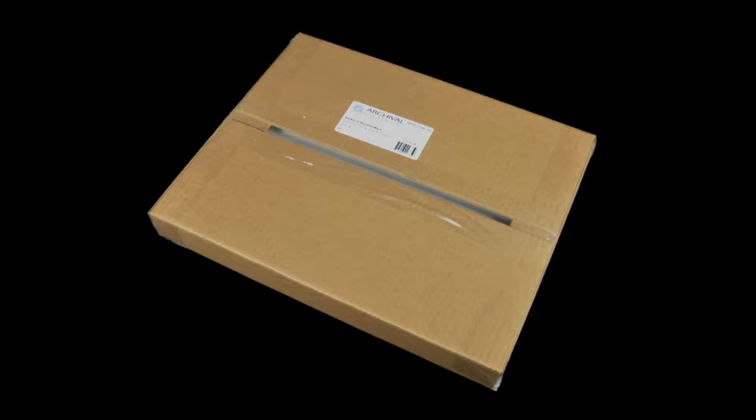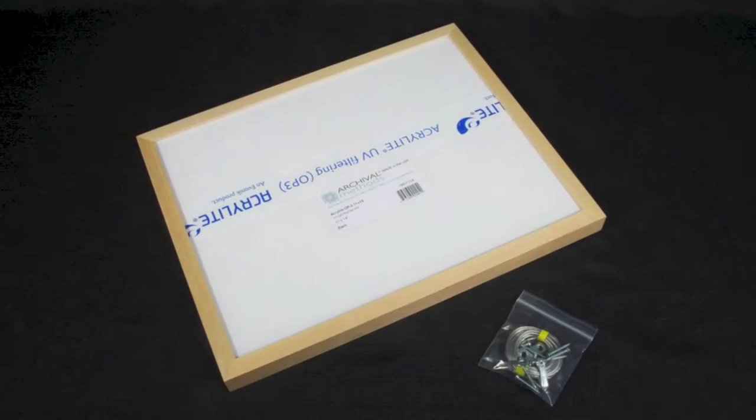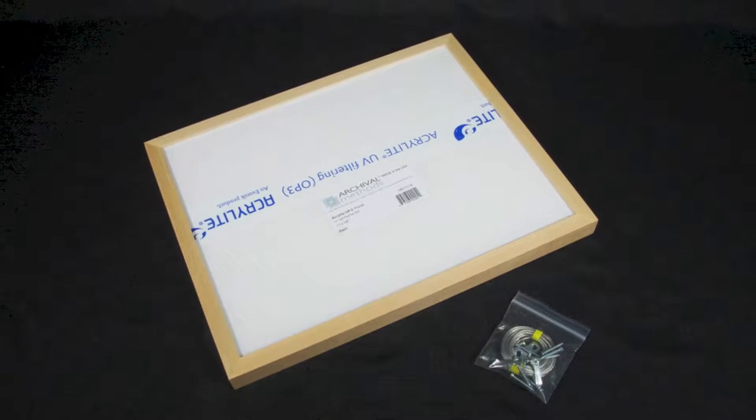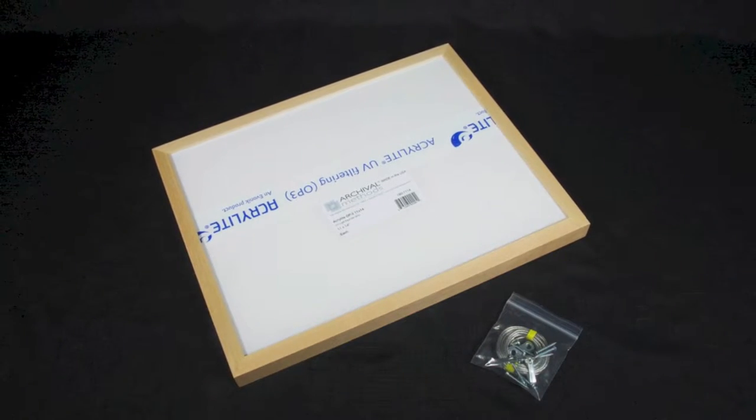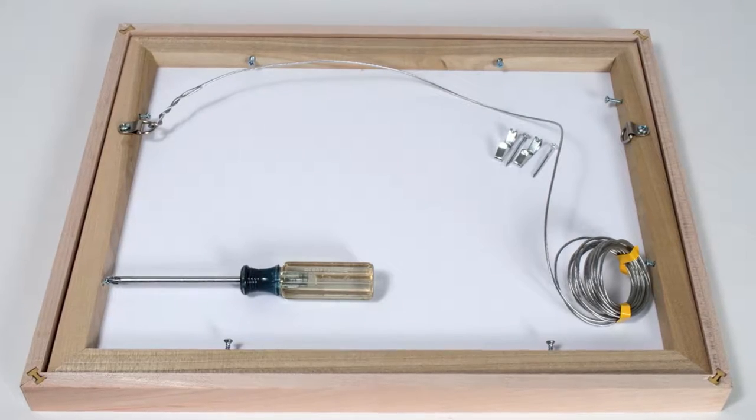Everything you need to frame your matted piece is right in the box, including hardware, UV filtering glazing, acid-free backing board, even picture wire and wall hooks.